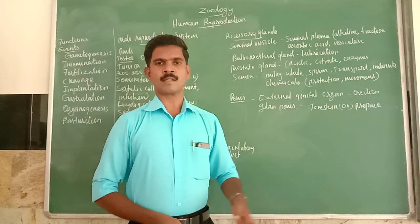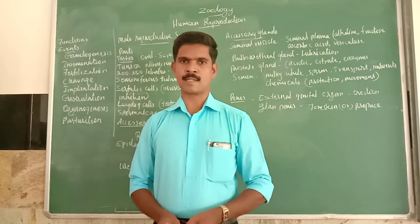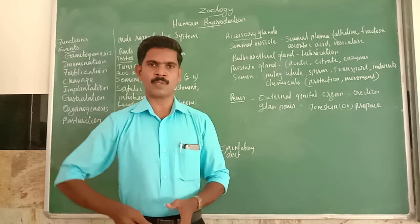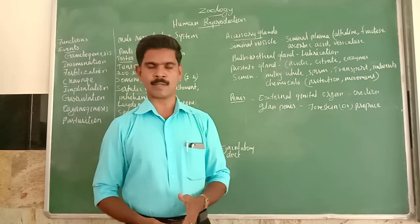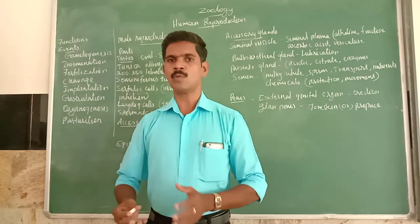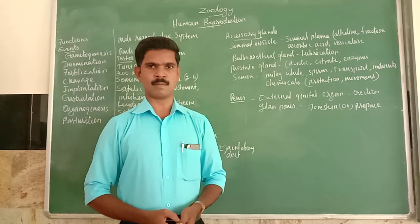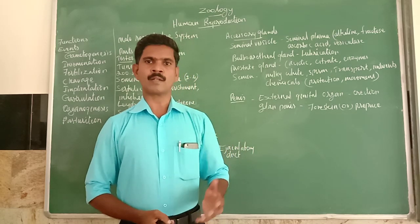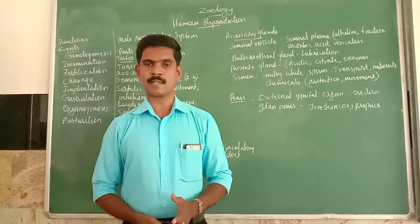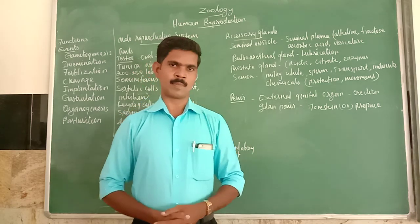In the last class we studied about sexual reproduction — meaning the fusion of both male and female gametes to form a zygote, and the zygote is developed into a new organism. This process is called sexual reproduction. Conjugation and fertilization are the important types of sexual reproduction.